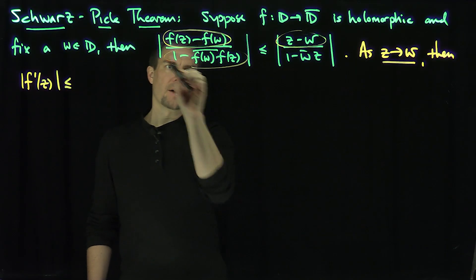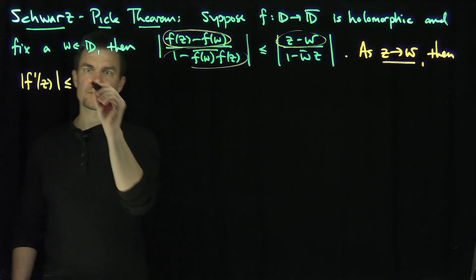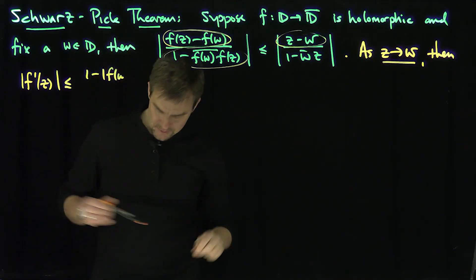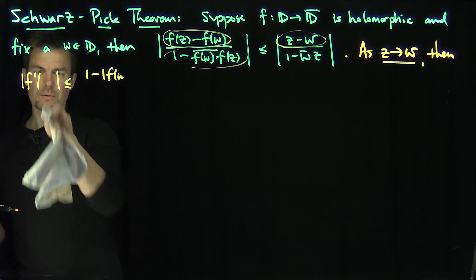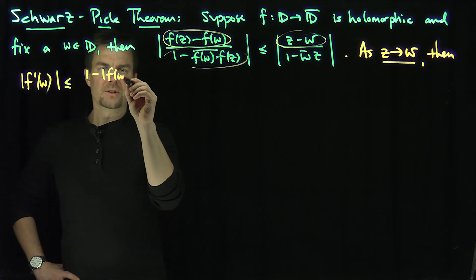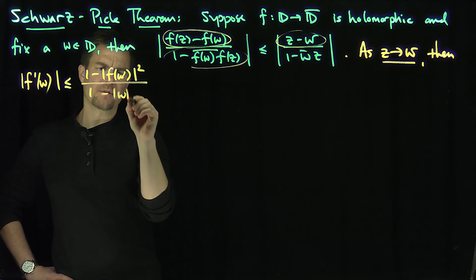I'll put this denominator now over there, and as z goes to w, this is going to be 1 minus modulus of f(w) squared over 1 minus modulus of w squared.